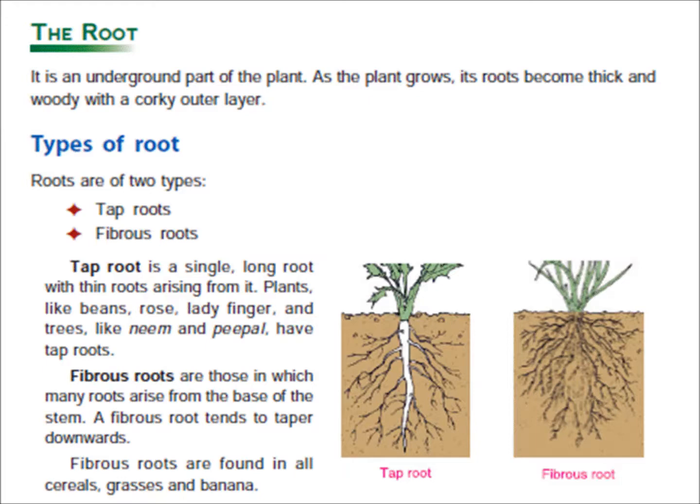Examples of tap root are bean, mustard, hibiscus, rose, and ladyfinger. Trees like neem also have tap roots. You can give examples such as ladyfinger, rose, and neem trees. Now you have to write the examples of tap root in your notebook.